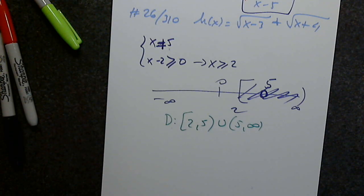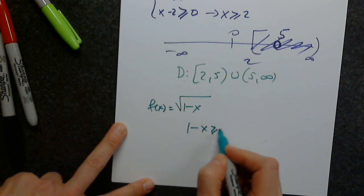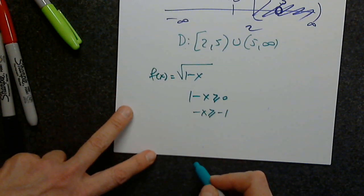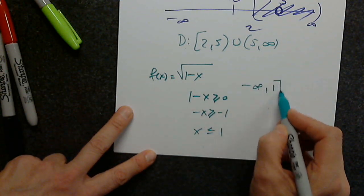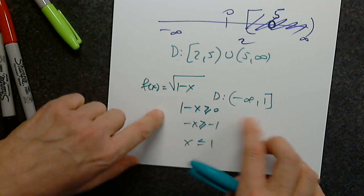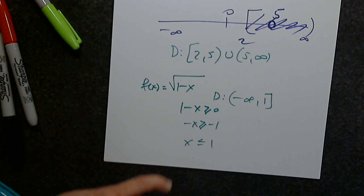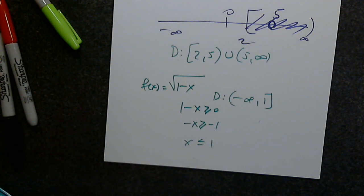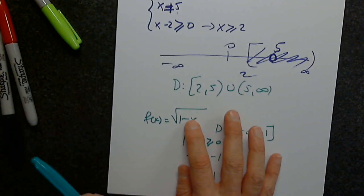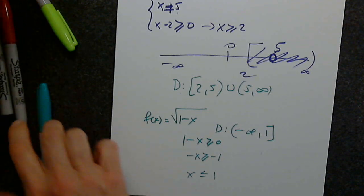Is it safe to say all radicals have a domain starting from a number to the right? No. For example, √(1 - x) gives 1 - x ≥ 0, so -x ≥ -1, and dividing by -1 gives x ≤ 1. The domain is (-∞, 1]. I didn't want you to think all radical domains go rightward — they can go to the left. But you always apply the same condition: whatever is under an even root must be ≥ 0.